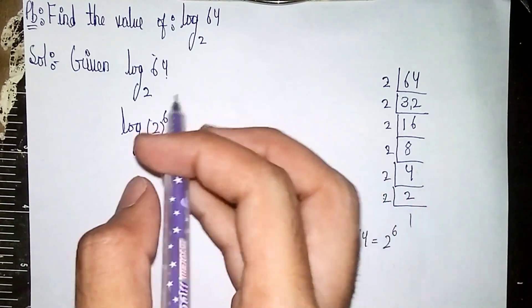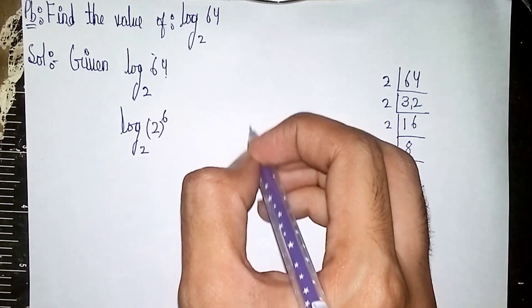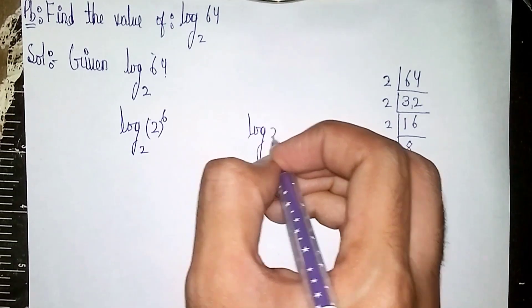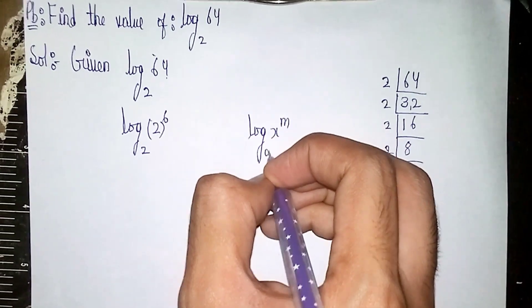The formula is: log of x power m to the base a is equal to m times log x to the base a.